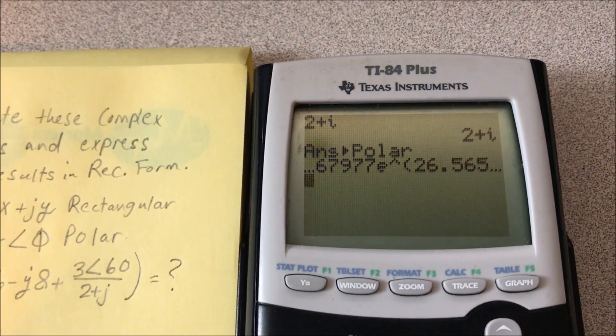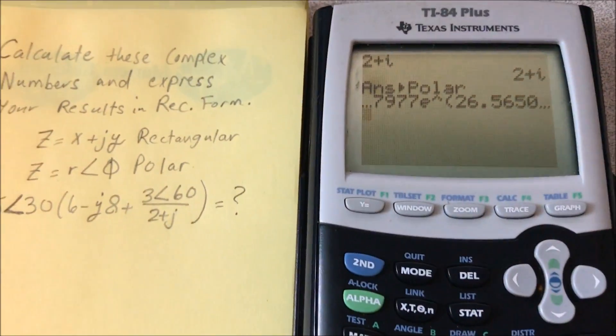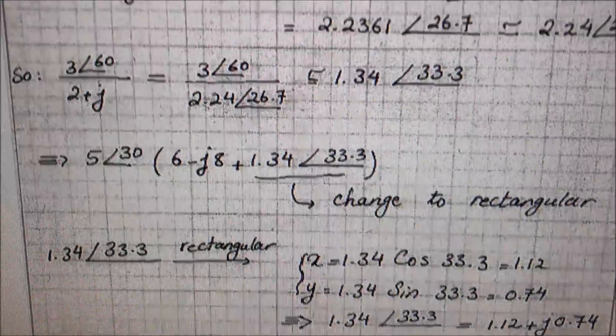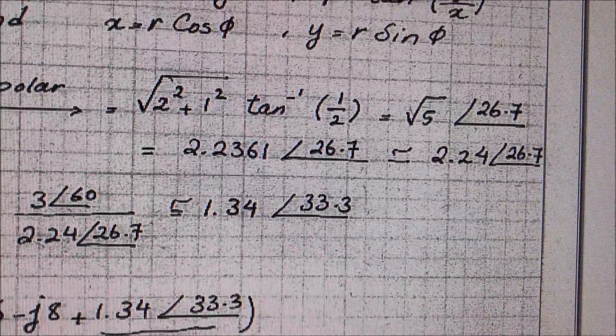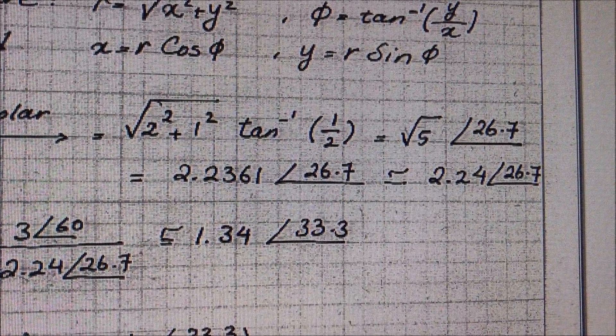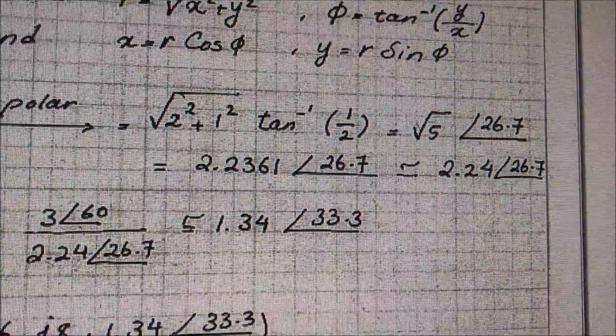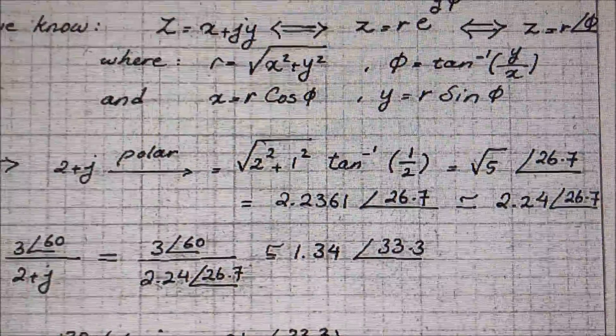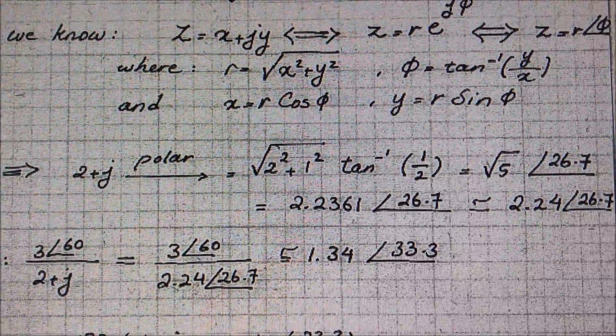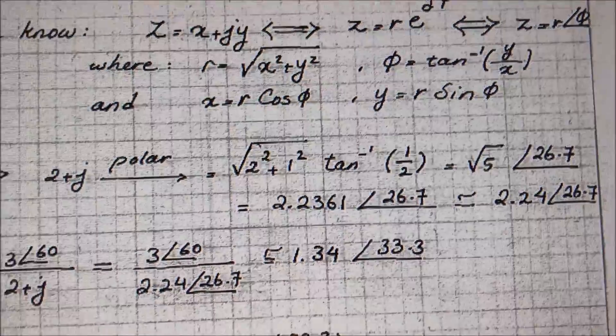And then e to the 26.56. So you would write that as 2.2361 angle 26.7. The manual method can also square root 2 squared plus 1 squared, inverse tangent y over x, to get the same thing.